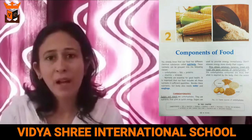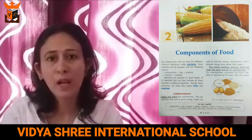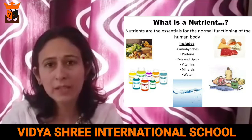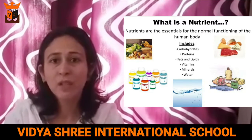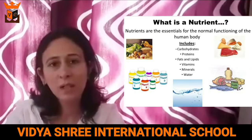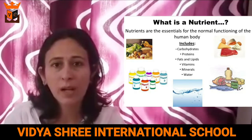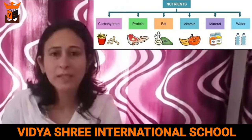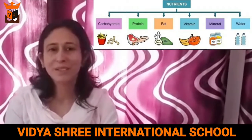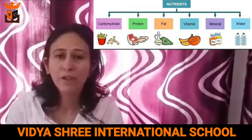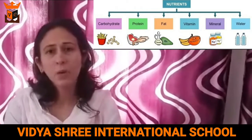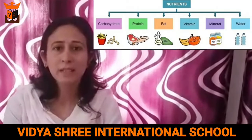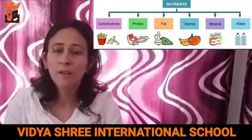There are basically five types of nutrients present in the food. First are carbohydrates, second are fats, third proteins, fourth vitamins, and fifth minerals. But besides these, water and roughage are also present in our diet. They do not provide us nutrition, but they have some other function. Now we will start discussing the nutrients of food one by one.